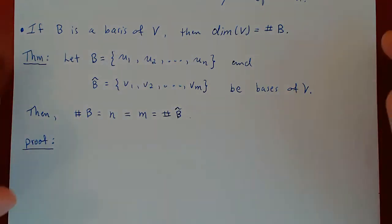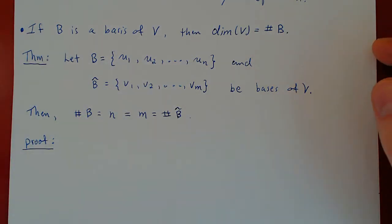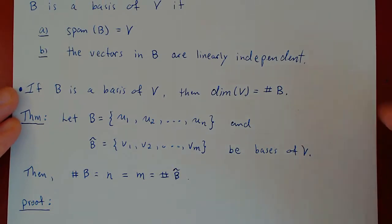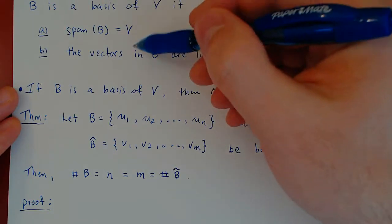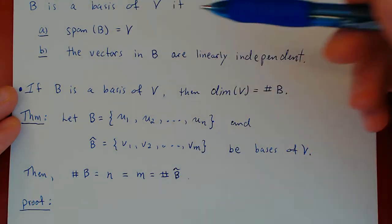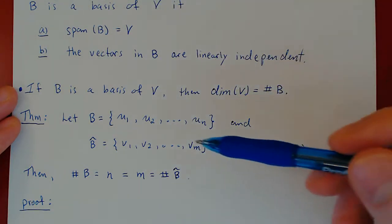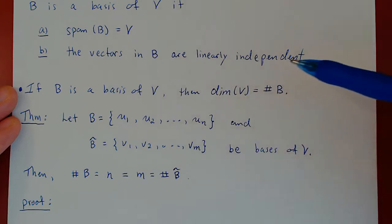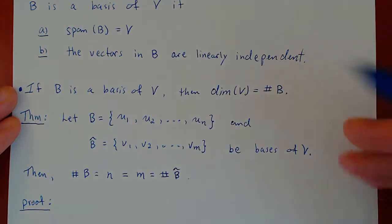Because B and B-hat are two bases, they both share these two properties: both B and B-hat span V, and both the vectors in B and the vectors in B-hat are linearly independent.